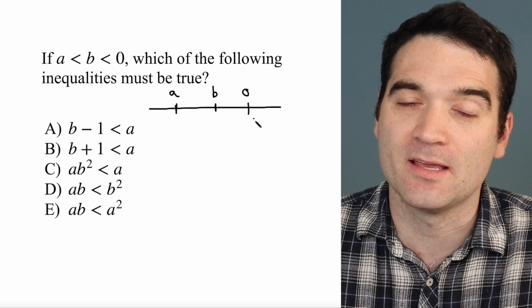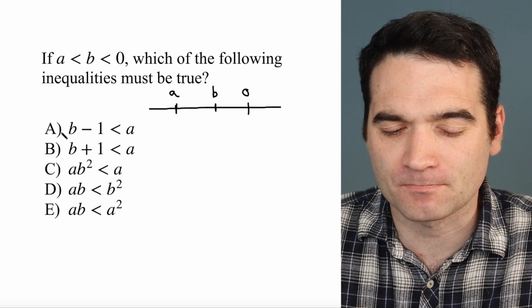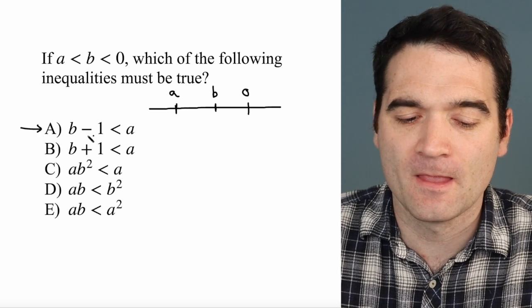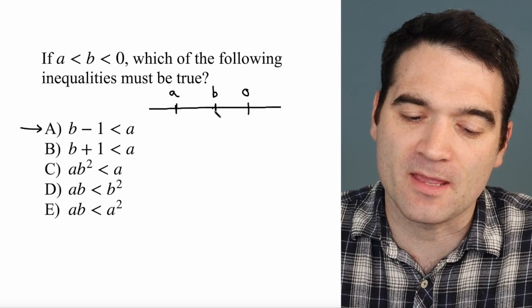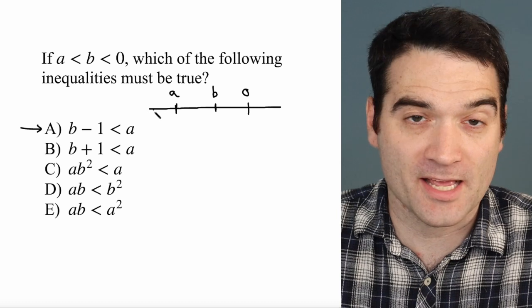So A is less than B is less than 0. Now let's consider each of these one by one, starting with this first one right here. B minus 1 is less than A. That means that if I start at B and I subtract 1, I'm going to end up below A. Is that true?